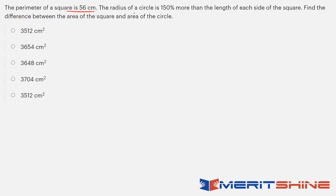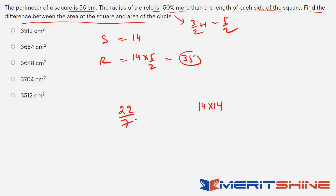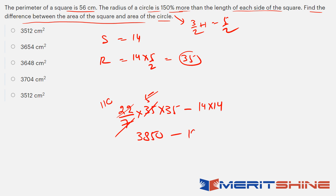Perimeter of a square is 56, so side is 14 cm. Radius of a circle is 150% more than the side, meaning 5 by 2 times 14 equals 35. Area of square is 14 times 14 equals 196. Area of circle is 22 by 7 times 35 times 35 equals 110 times 35 equals 3850. Difference is 3850 minus 196 equals 3654 cm squared. This was a question that had to be done.